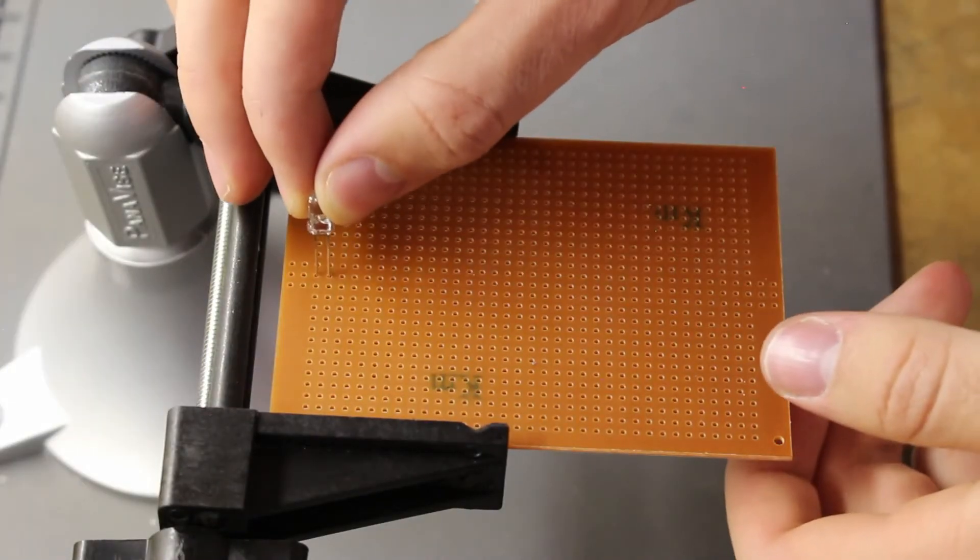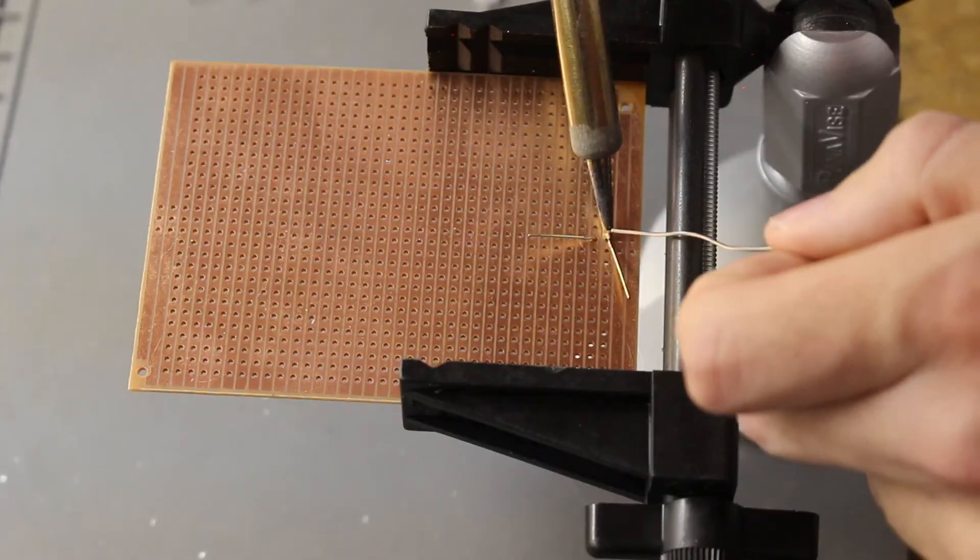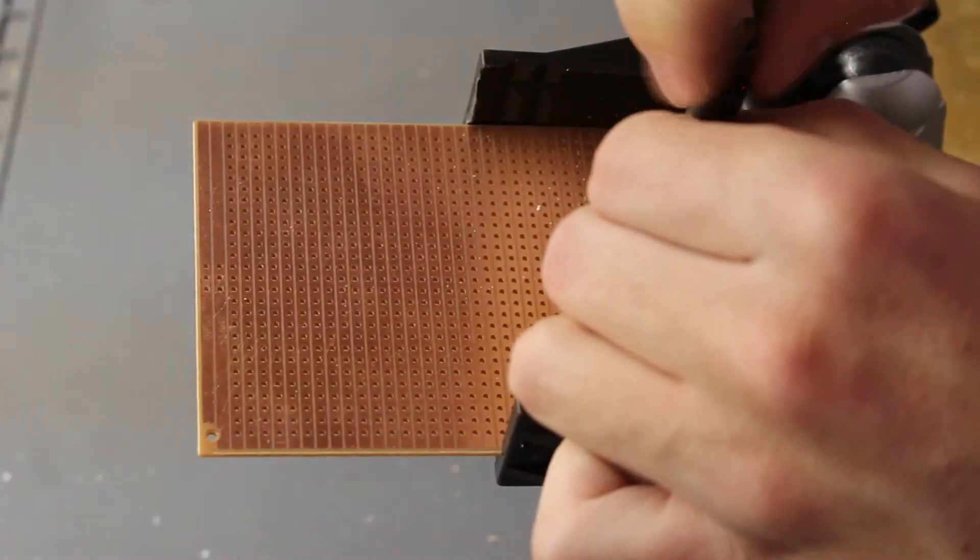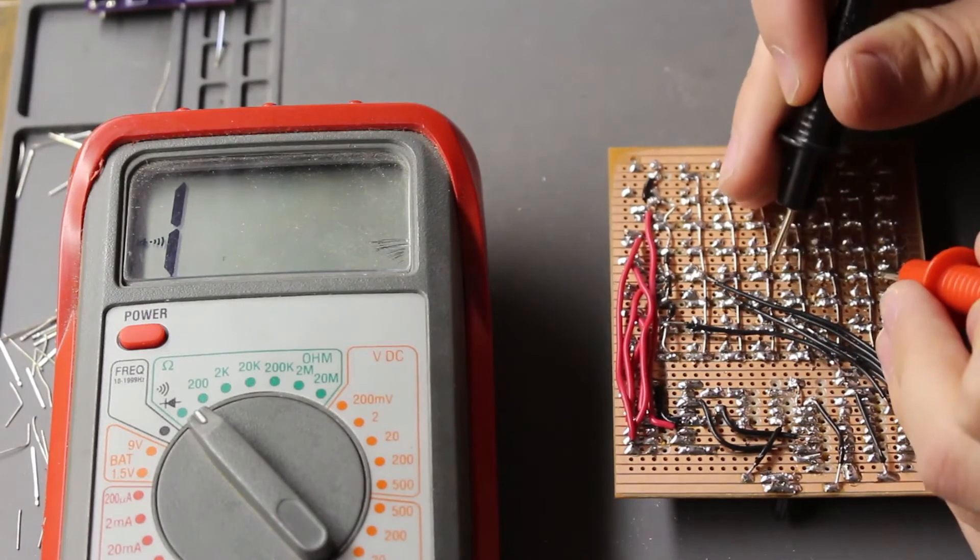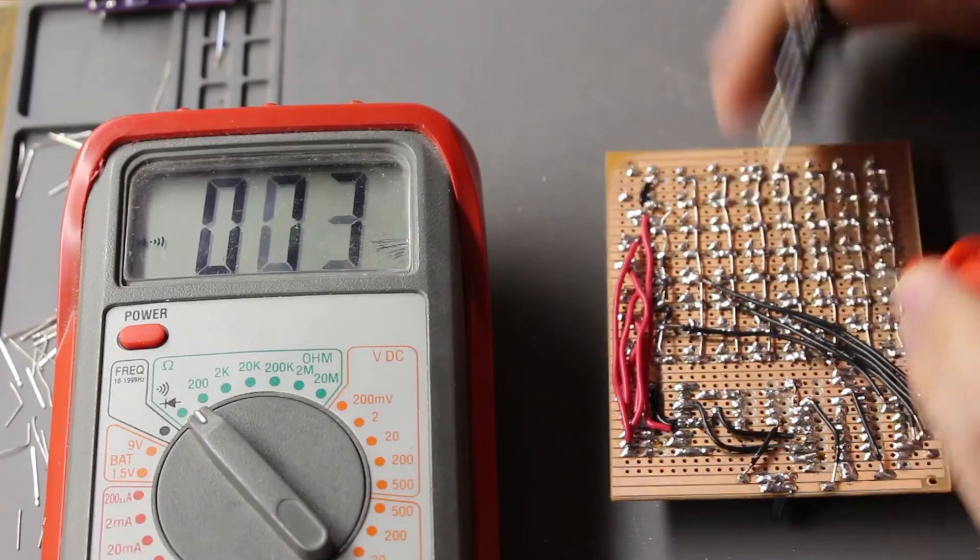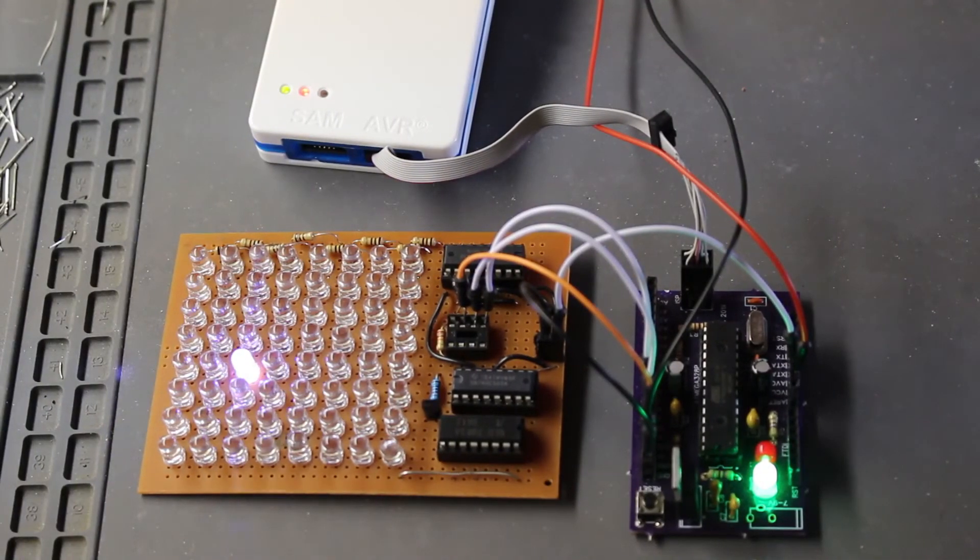Since there are so many LEDs, I recommend that you take it slow and test each row and column. I recommend you follow my advice, or else you'll end up like me and have to debug several shorts that you missed the first time around. But finally, after all the debugging, the project is complete, and it is time to write the code for the microcontroller.